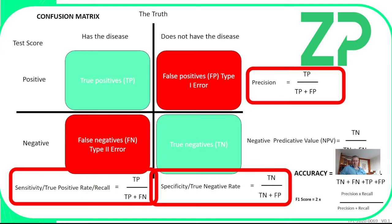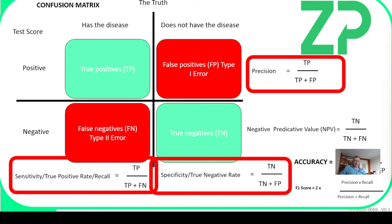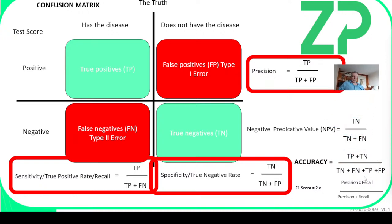Precision is true positives over the sum of true positives and false positives. Accuracy — this is the one where you need a minimum of 70% — is the sum of true positives plus true negatives over true negatives plus false negatives plus true positives plus false positives. The process is quite straightforward but you get quite powerful metrics out of it.